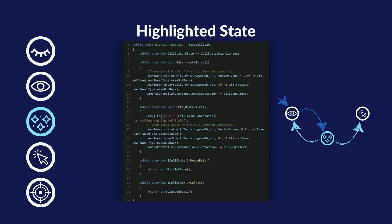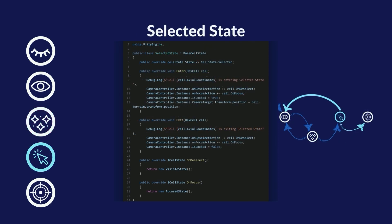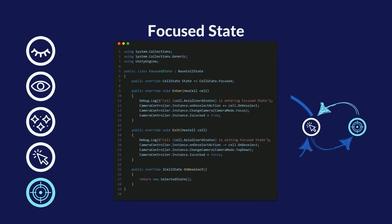For the highlighted state I've decided to move the cell up a bit for now — this is not a permanent solution but it works for the demonstration. If you want to do the same you'll need to import the LeanTween package from the asset store; it's free, powerful, and simple, so I suggest you try it out. There are two transitions here: on mouse exit leads back to the visible state, and on select leads to selected state. In the selected state I don't do much visually, but subscribe and unsubscribe to events in camera controller and lock the movement of the camera. We have two transitions: on deselect and on focus. And finally, the focus state is similar to the selected state in that it subscribes to the deselect event in camera controller and locks the movement. It also changes the camera mode. On the deselect event it transitions back to selected state.